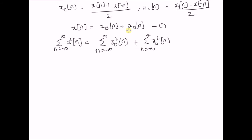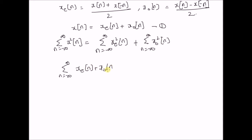So, by using equation 1 in the left hand side, we have the sum n equal to minus infinity to plus infinity of x_e of n plus x_o of n, the even component plus the odd component, whole squared.